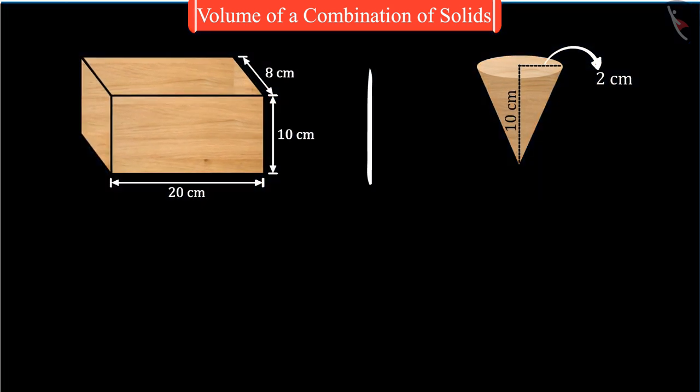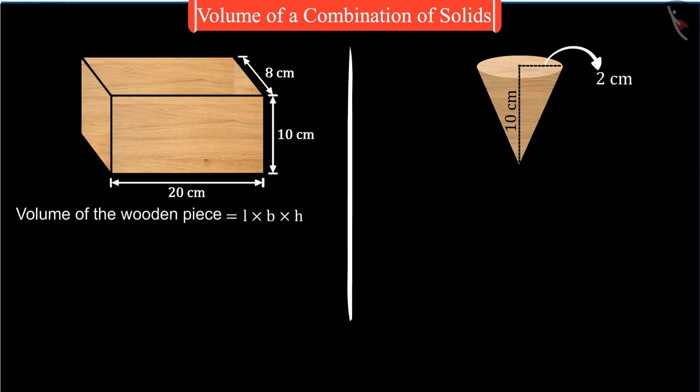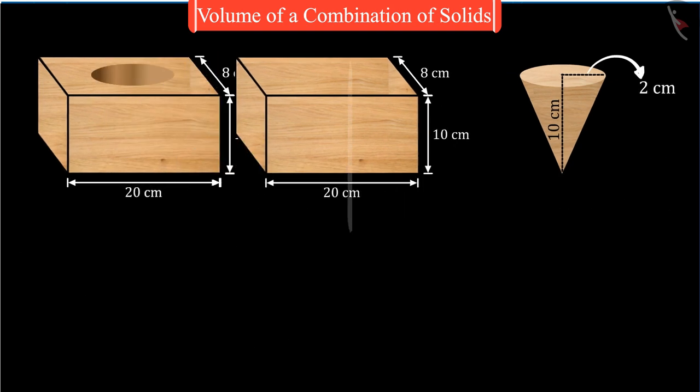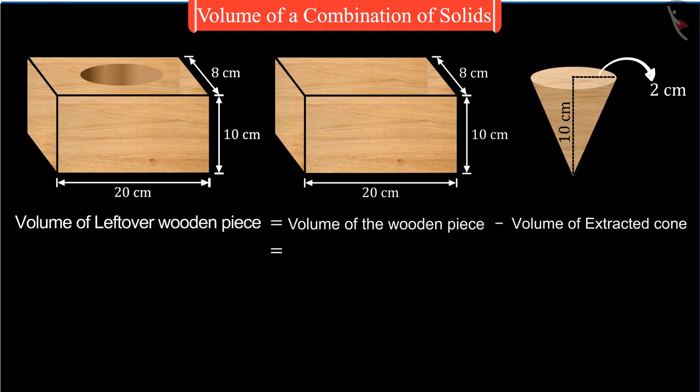So here, we subtract the volume of the smaller solid from the bigger solid, and this gives us the volume of the remaining piece of wood.